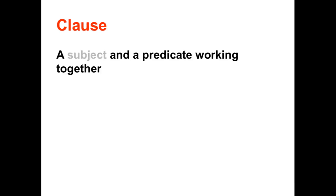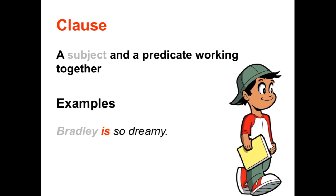A clause is a subject or group of subjects working with a predicate or group of predicates. Here is an example of a clause: 'Bread is so dreamy.' The verb 'is' is functioning as the predicate. So we ask ourselves, who or what is? The answer is Bradley, which makes Bradley the subject. In this sentence we have Bradley the subject working with the predicate 'is,' which means this sentence has one clause. That makes clauses seem an awful lot like sentences. But clauses are different from sentences, because every sentence has to have at least one clause, but some sentences are made up of more than one clause. Clauses are the building blocks of complex sentences.